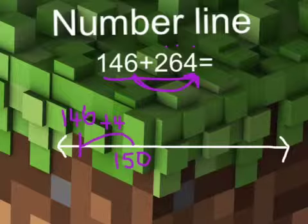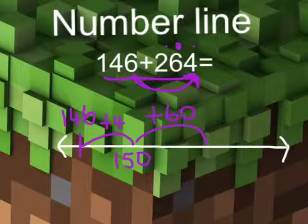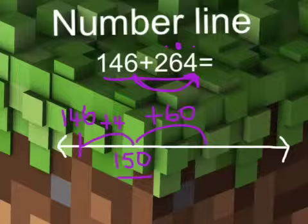Now I'm going to add the 60 of the 264. Now 60, a jump of 60. I'm already on 150, and I need to jump 60. So I can see a doubles plus 1 there, 6 and 5. Well, I know that my doubles is 5 and 5 is 10, and one more is 11. So I've actually got 210.